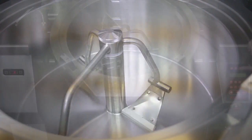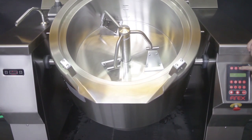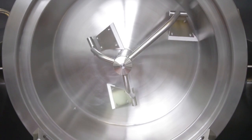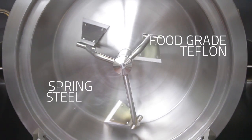Coochie Max is a direct heating appliance with no jacket. It has a programmable three-blade mixer, the scrapers are in food-grade Teflon and spring steel.